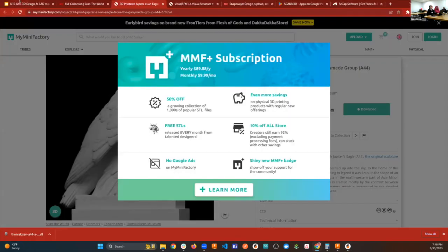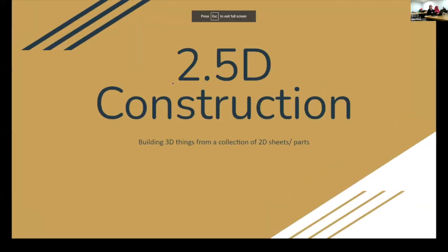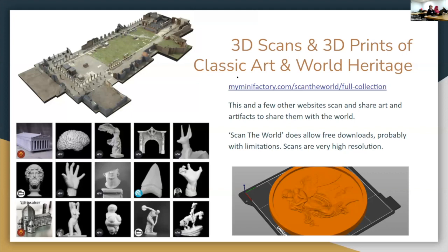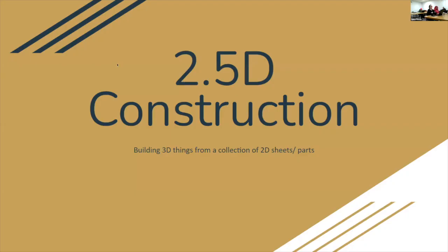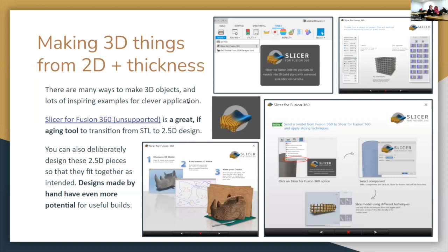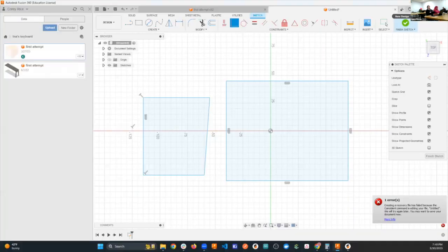Back to two-and-a-half D construction — we've talked about the designs shown here. Slicer for Fusion 360 is a great way to make the process much simpler. Let me pull up Fusion 360 and make a brand new design just to demonstrate something relatively simple. We'll do a quick sketch, make a circle and a line, and create a donut.